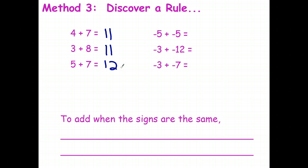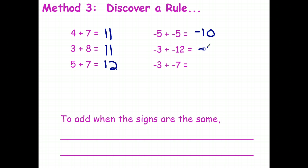So let's quickly do this: $4 plus $7 is $11; $3 plus $8 is $11; $5 plus $7 is $12. On the right-hand side, a bill for $5 plus a bill for $5 means we owe $10. Here, negative $3 plus negative $12 is negative $15.